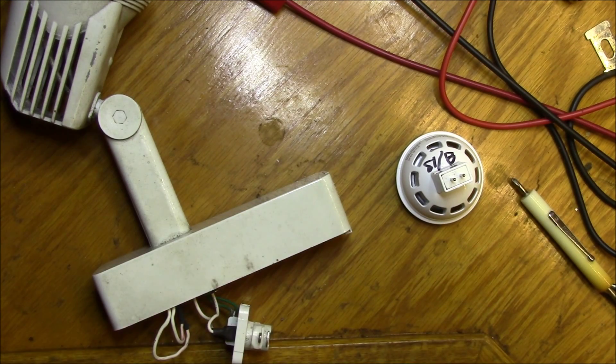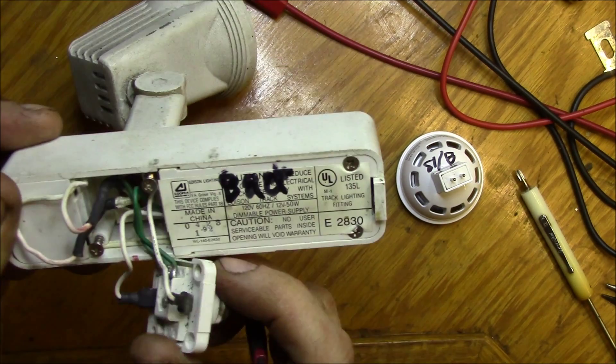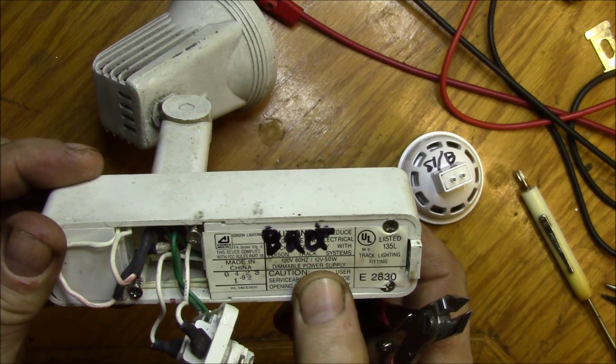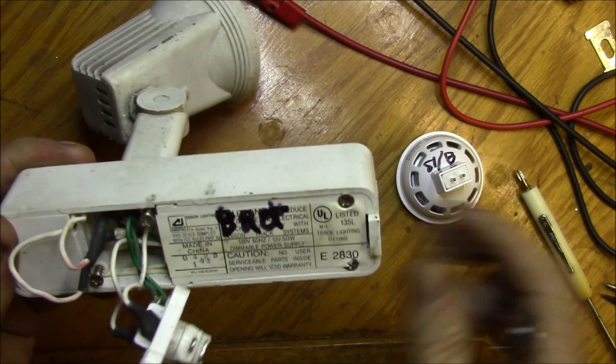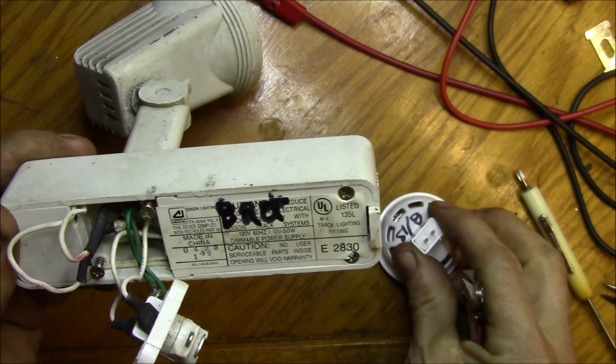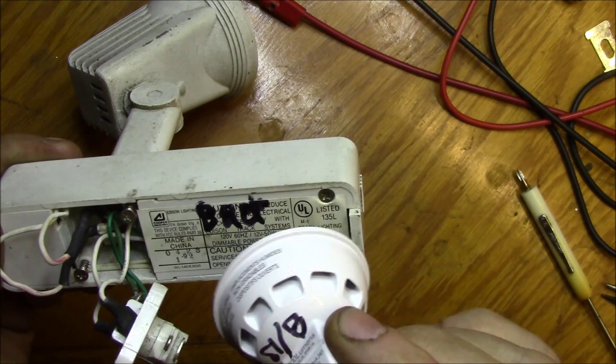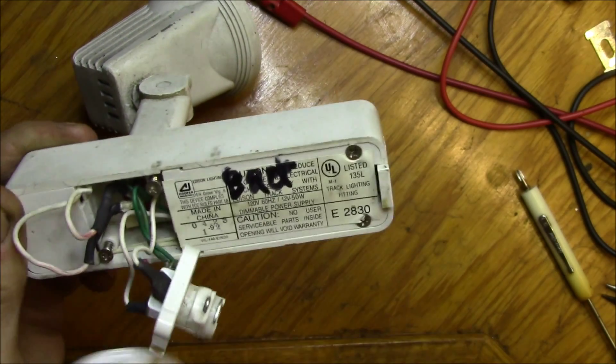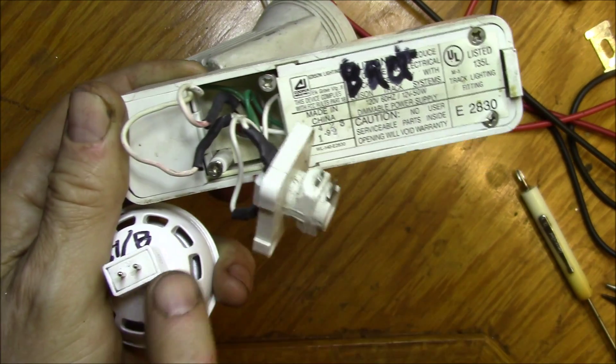It works with any track light with 12 volt output. This won't apply if you have the GU 10 bulbs which run off of high voltage.